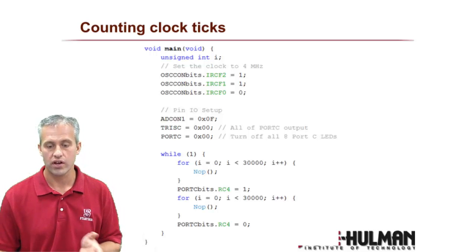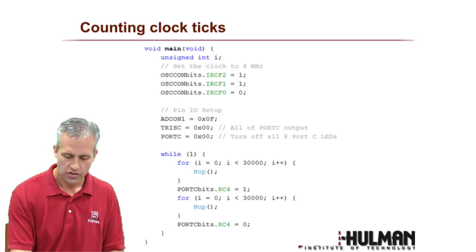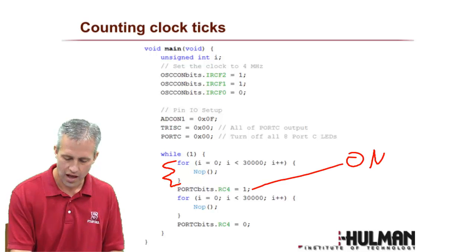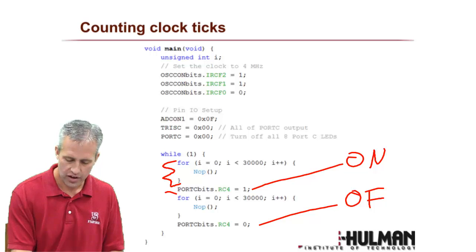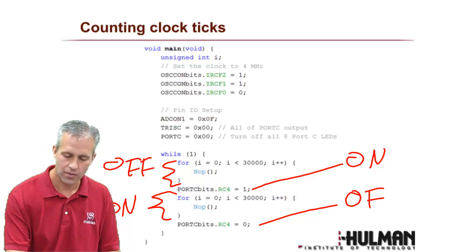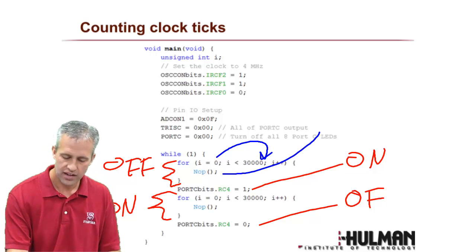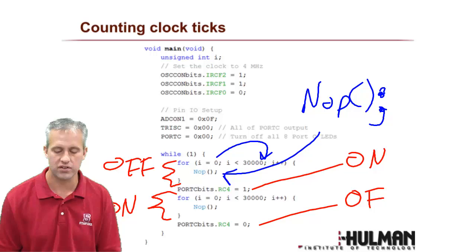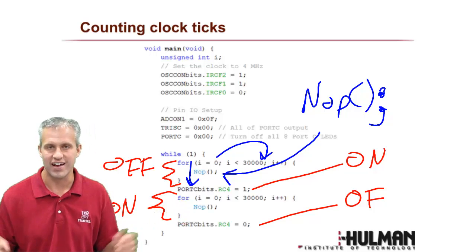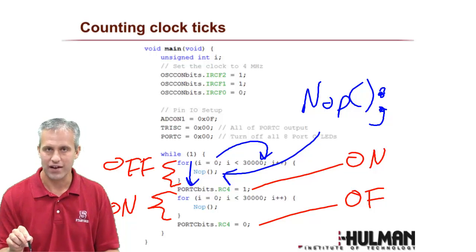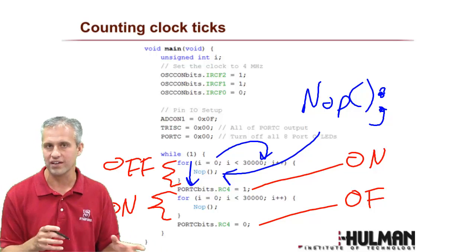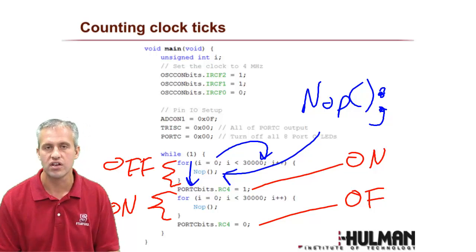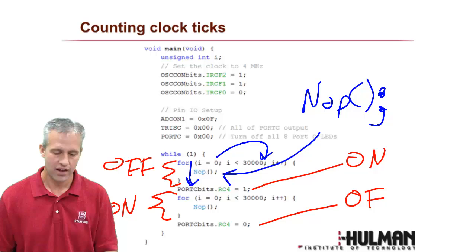You could use instruction cycles to cause delays if you wanted. In this example, we're turning an LED on and off, leaving it on for a certain length of time and then off for a certain length of time. What I'm doing here is running a loop from zero to 30,000. Inside this loop I have a function called NOP — it stands for no operation, it just means do nothing, just burn an instruction cycle. This will delay for some length of time. The trouble is it will not be exactly 30,000 instruction cycles — it will be some larger number because the for loop itself takes time. You could use something like this to do time delays, but there's a better way, which we'll talk about next time.